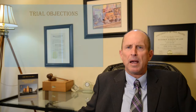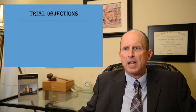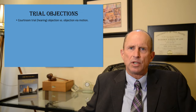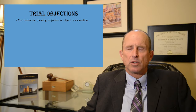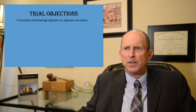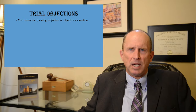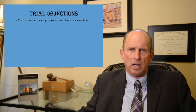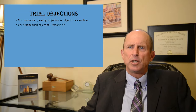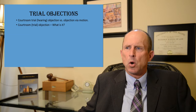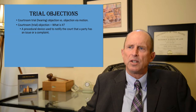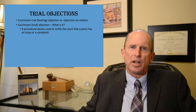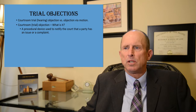I want to begin by making a distinction between objections made pretrial — for example in motions in limine — and trial objections made while testimony is ongoing. So let's talk about what a trial objection is. It's a procedural device used to notify the court that a party has an issue or complaint — you're getting the judge's attention. Generally, a trial objection serves two main purposes.